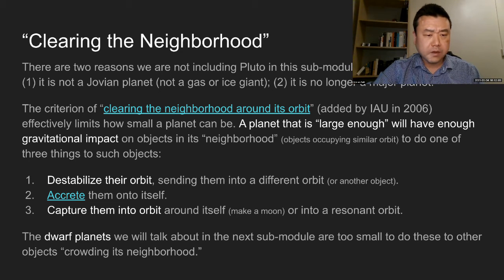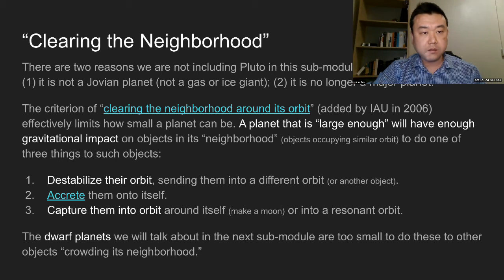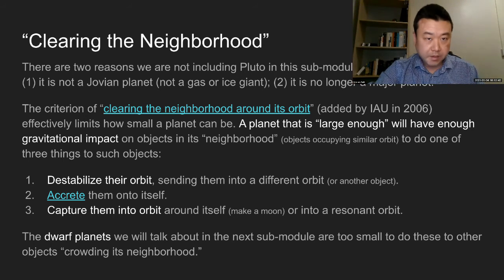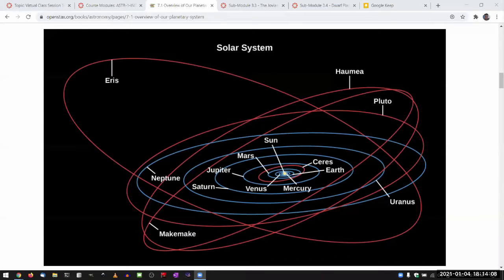So I wanted to show you this picture of some of the major objects in our solar system so that you can see what we mean by clearing the neighborhood. This is an image from chapter seven, figure 7.3, you can find it in the textbook.